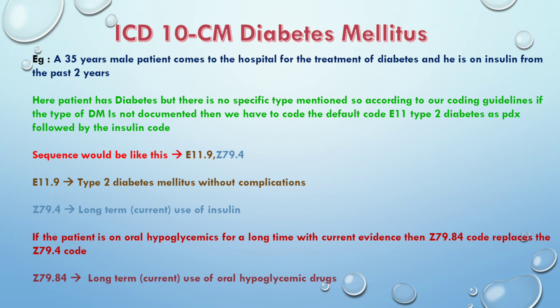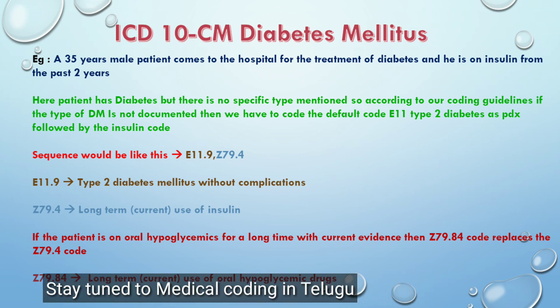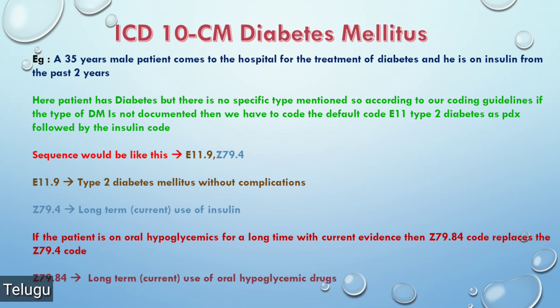If the patient has oral hypoglycemic drugs for a long time with current evidence, then Z79.84 replaces Z79.4. Z79.84 is called long-term current use of oral hypoglycemic drugs. If a patient is using both hypoglycemic drugs and insulin, we report only the insulin code Z79.4.